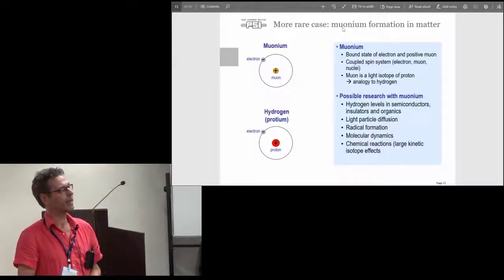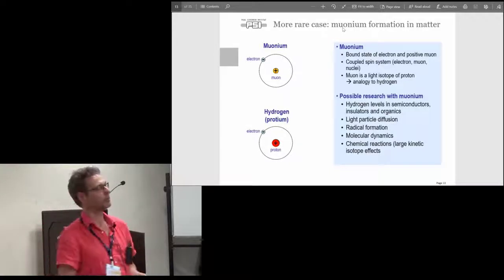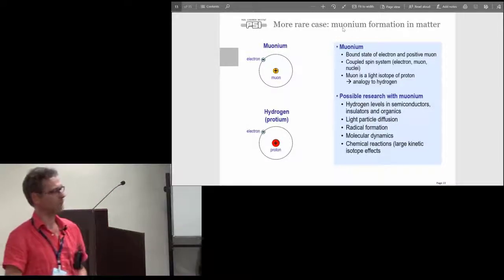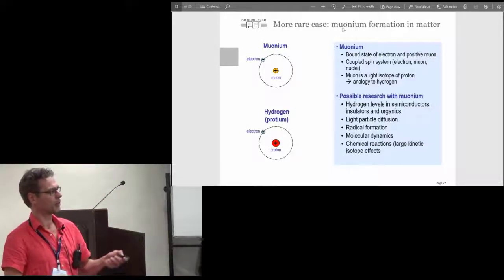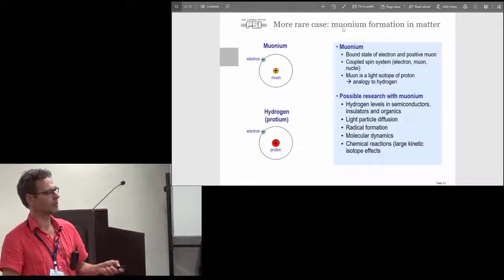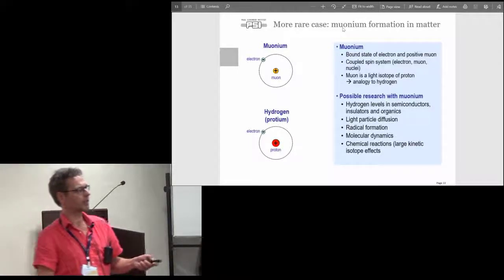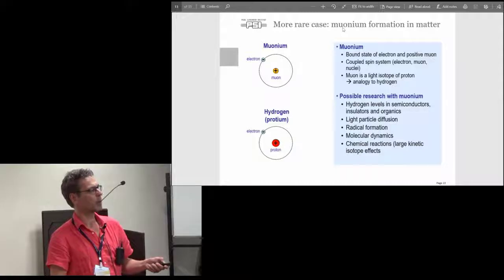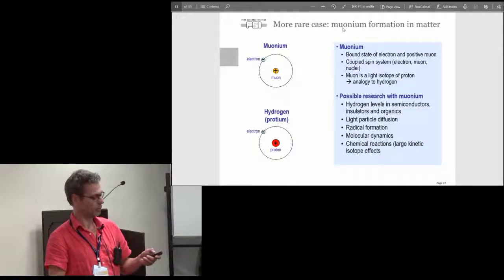In some more rare cases, you use the muonium state. I will have in my contributed talk afterwards an example where we use the muonium atom as a sensor for charge carriers at the surface of germanium wafers. This is to study hydrogen states in semiconductors and insulators, but also to do chemistry, radical formation, molecular dynamics, or chemical reaction kinetics.